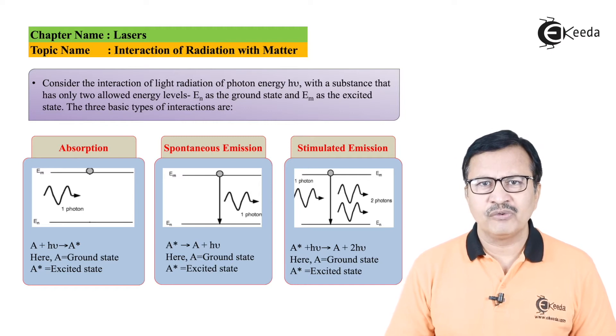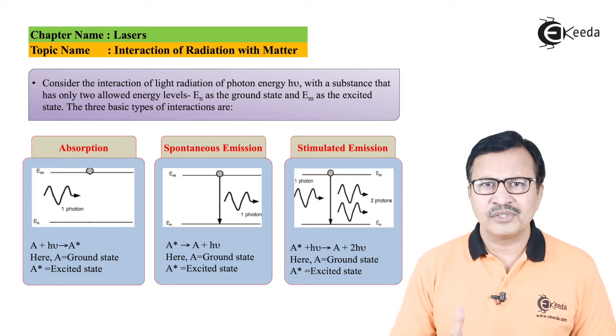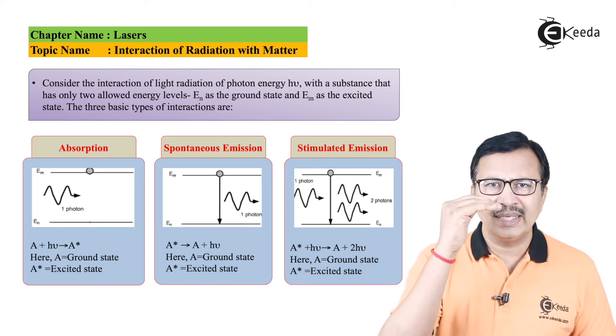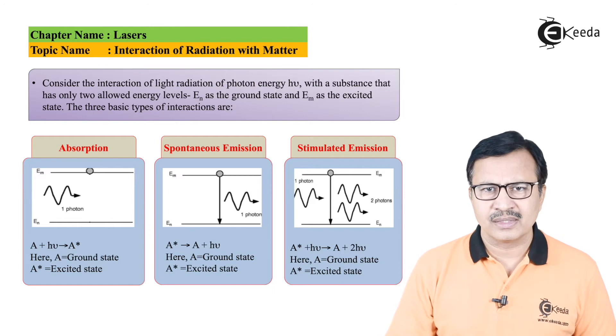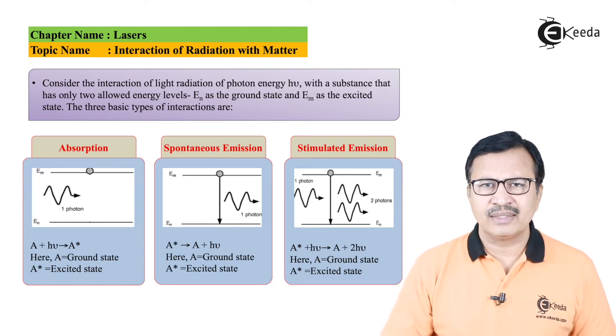Let us move to the second type of interaction between radiation and matter. This is called spontaneous emission. Now our atoms are already there in the excited states - not all of them of course, a few of them will be in the excited state.